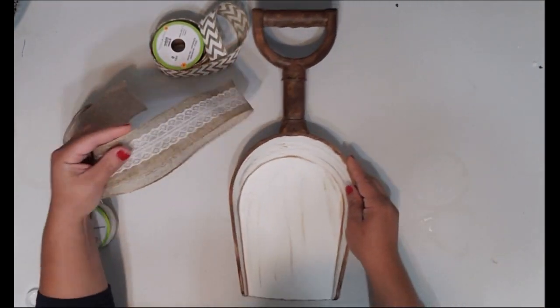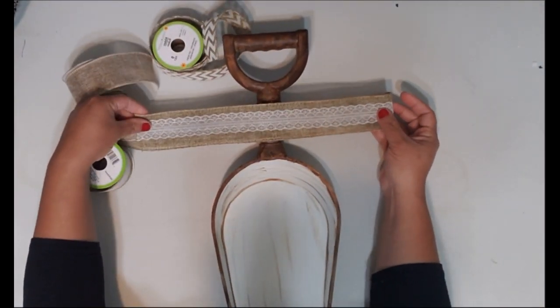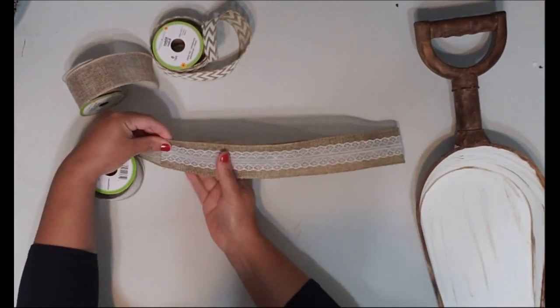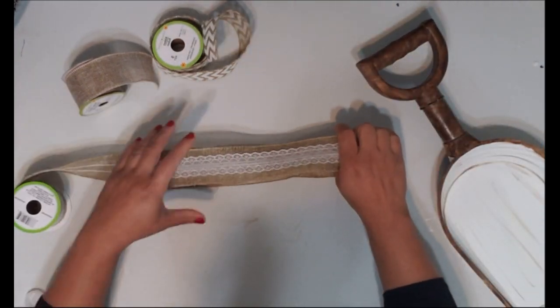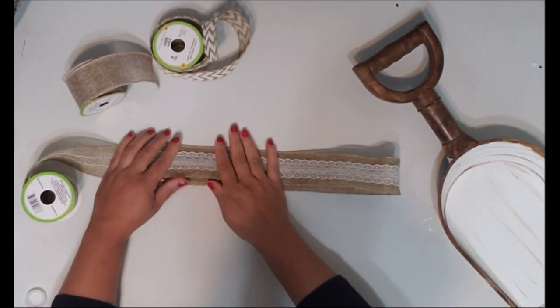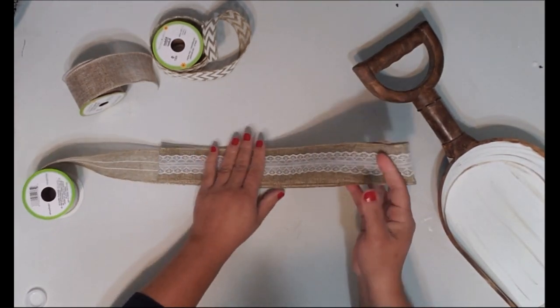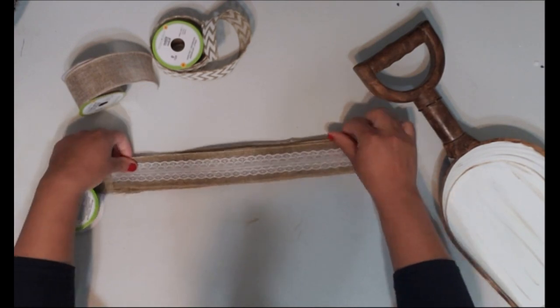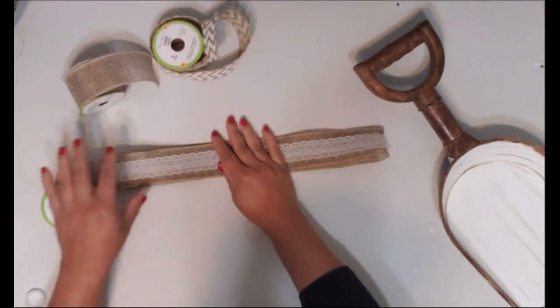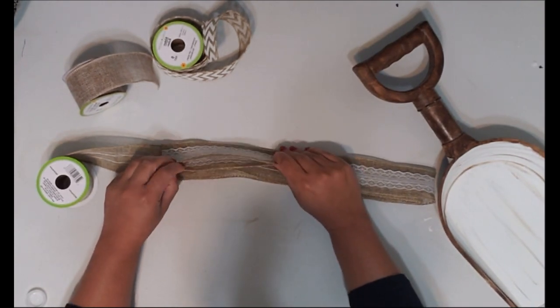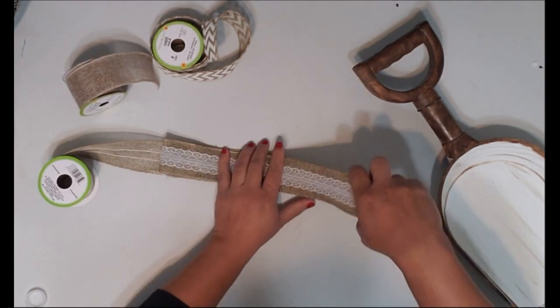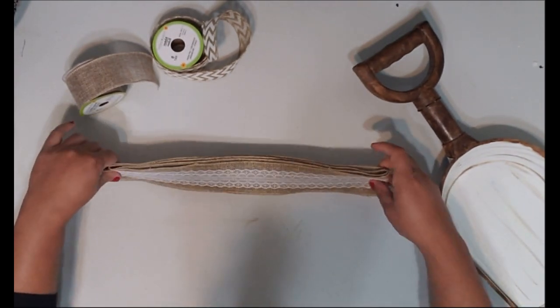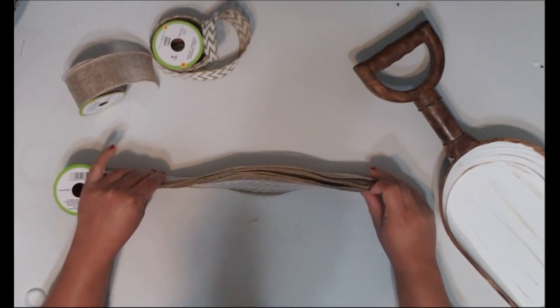You kind of want to try and take this and kind of measure out how big you're wanting it to be because you're going to have a three-layer bow. So I'm just going to flop it over like this, and this is depending on how many loops you want. I want two loops coming out, so you have two loops on my side and two loops on that side.